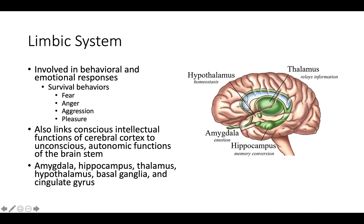The limbic system is involved in behavioral and emotional responses, with various survival behaviors associated with it — fear, anger, aggression, and pleasure. It is a very primitive system, present in reptiles and fish, making it evolutionarily ancient. It also links the conscious intellectual functions of the cerebral cortex to the unconscious autonomic functions of the brainstem. Its components include the amygdala, hippocampus, thalamus, hypothalamus, basal ganglia, and cingulate gyrus.